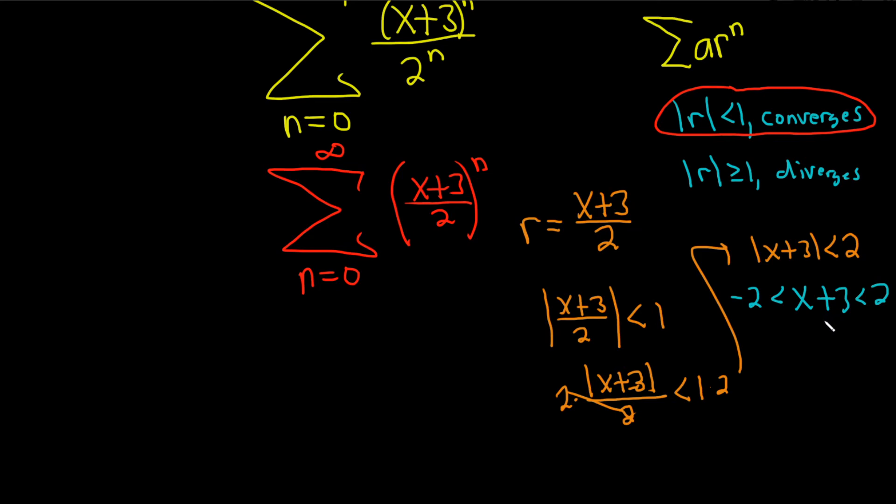To finish solving for x, we can just subtract 3 from all three sides, so minus 3, minus 3, minus 3. So you get -5 < x < -1. That's actually the answer. That would be the set of all x for which the series converges.